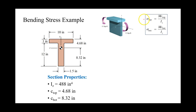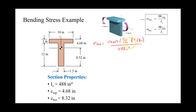Now that we have our section properties, we can calculate the stress at the top surface. Sigma_top equals 11 kip-foot, converted to kip-inch by multiplying by 12 inches per foot, times c_top of 4.68 inches, divided by the moment of inertia of 488 inches to the fourth power. Checking units: feet cancel, leaving kip per inch squared, also known as KSI. The result is 1.266 KSI, and we can tell by observation that this is in tension.